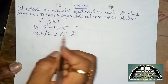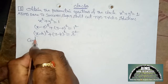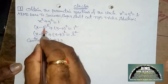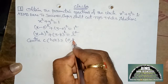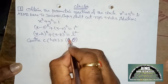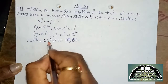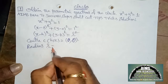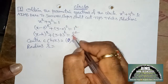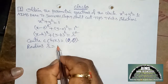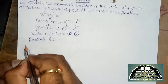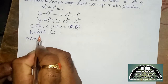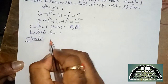Comparing with the standard equation of the circle, we get center C(h, k) where h = 0 and k = 0, so the center is (0, 0). Next, the radius: r² = 1, so r = 1. Now I want to write the formula.